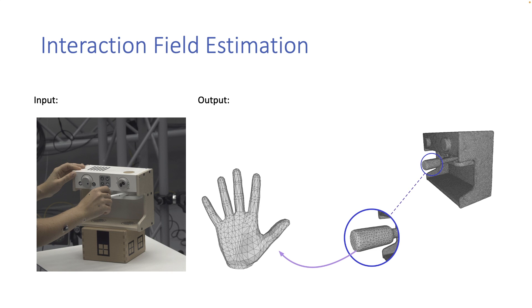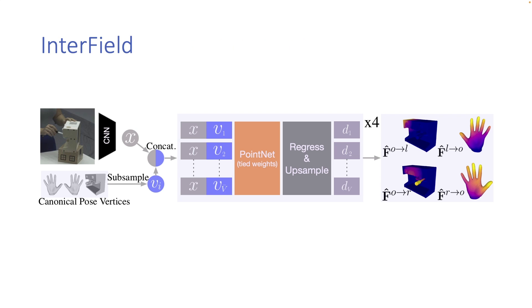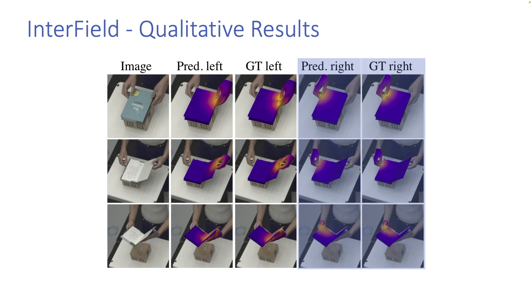Since there are two hands, we have four interaction fields to estimate in total. Brighter colors represent smaller distances in the interaction fields. We present a baseline method called InterField. We evaluate both the single frame and the temporal method. Here we show predictions from our temporal model. The prediction correlates well with the ground truth for the left hand and the right. We use ground truth meshes for visualization purposes; they are not used as input.